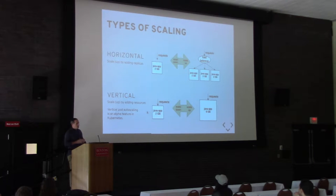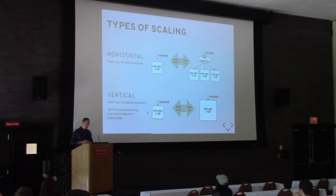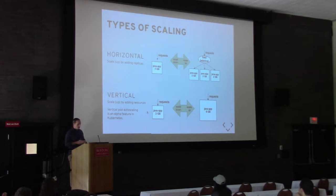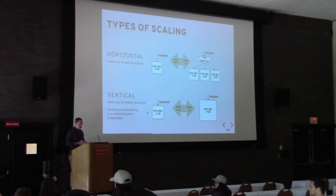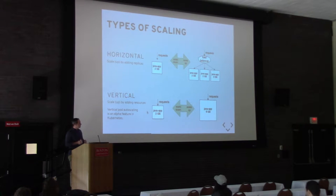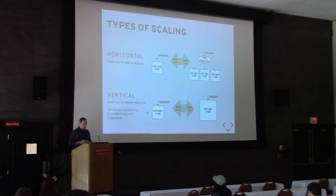Another main benefit you get with OpenShift is scaling. There are two main types: horizontal scaling, where as load increases you add more instances of an application behind a load balancer — a well-established feature in Kubernetes — and vertical scaling, which is the subject of this project, which is adding more resources directly to an instance of an application. They're not mutually exclusive; you can combine horizontal and vertical scaling.